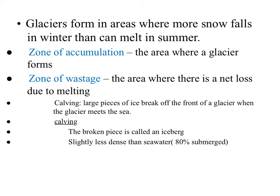We left off yesterday by talking about the zone of accumulation and the zone of wastage. In your vocab last night, you guys defined some of these terms, and one of the terms we used was the snow line, which is basically the boundary between the zone of accumulation and zone of wastage. We're going to have snow above this line all year round, and below that snow line is where we'll have snow that melts off during the summer.